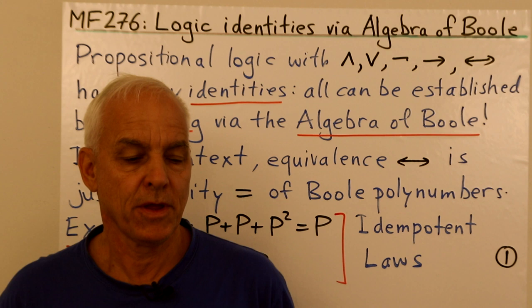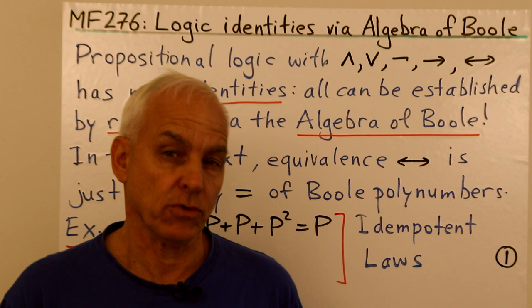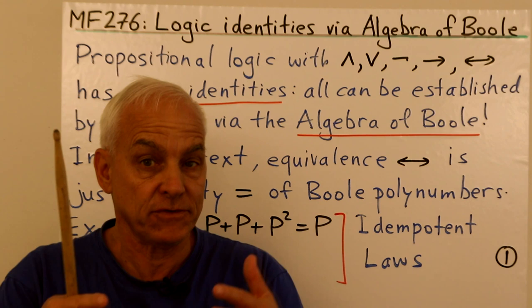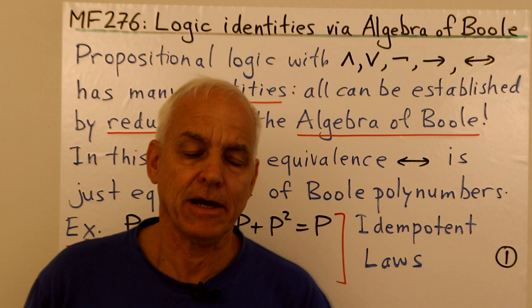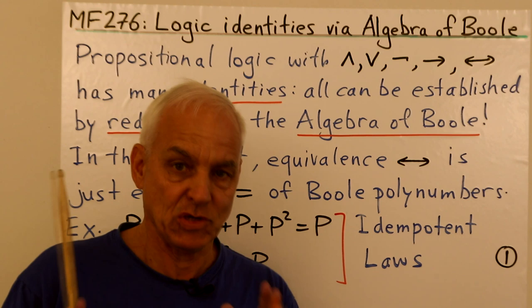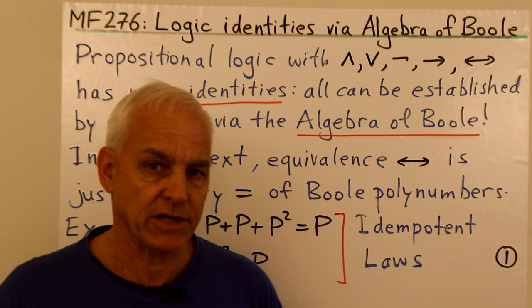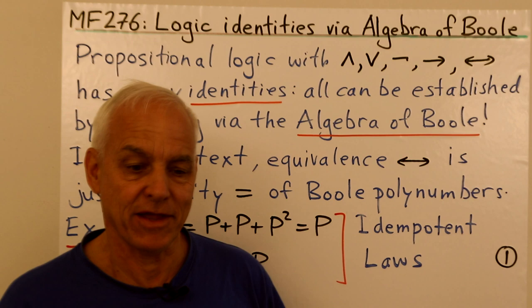Good day, I'm Norman Wildberger. We've been talking about propositional logic and last time inference rules. Today we're going to talk about identities in propositional logic, which are another set of tools that we can use to manipulate arguments from a logical point of view. There are actually quite a lot of them, and the algebra of Bool, which is this purely algebraic mod 2 kind of arithmetic, really suffices to demonstrate all of these identities.